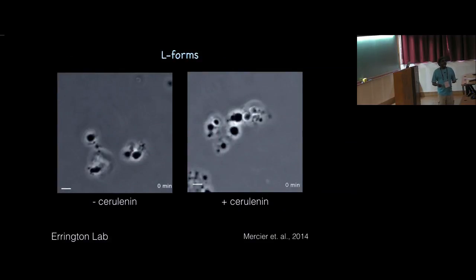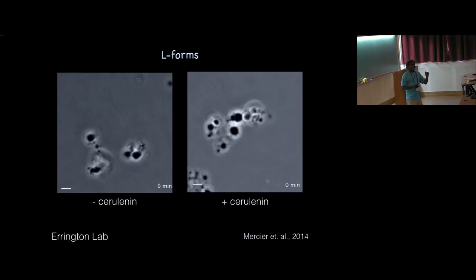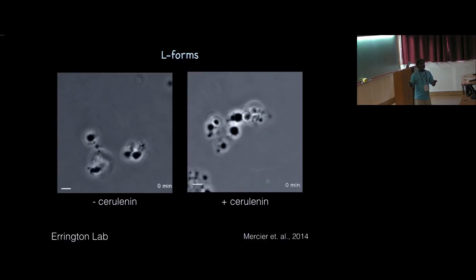What about organisms without FtsZ? This is elegant work from Errington's lab, where they took existing rod-shaped bacteria with all the MreB actin-like organization and spiral organization organizing cell wall synthesis. They grew them on antibiotic-containing plates to completely inhibit cell wall synthesis, and got colonies where cell wall synthesis was completely inhibited — producing cells that were spherical like this.